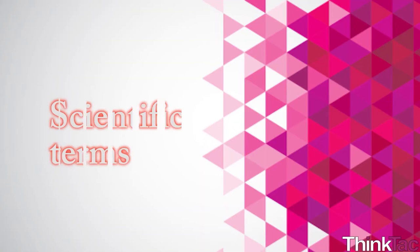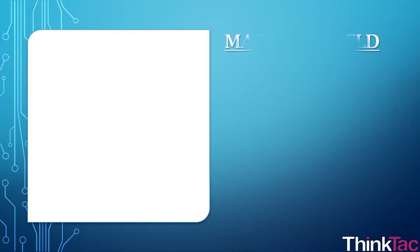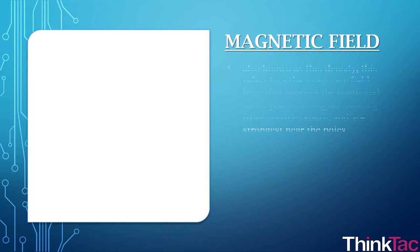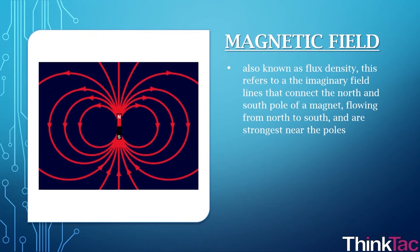There are various scientific terms that you need to familiarize yourself with as you go through this activity. The first is the magnetic field, also known as flux density or magnetic flux density. This refers to the imaginary field lines that connect the north and south pole of a magnet, flowing from north to south, and are strongest near the poles.